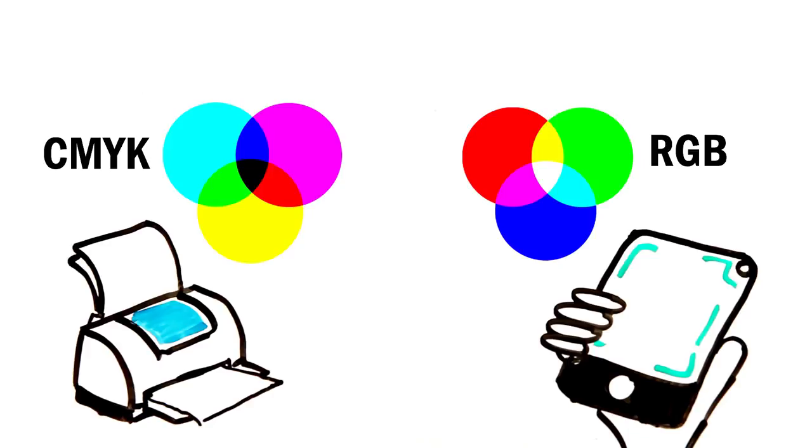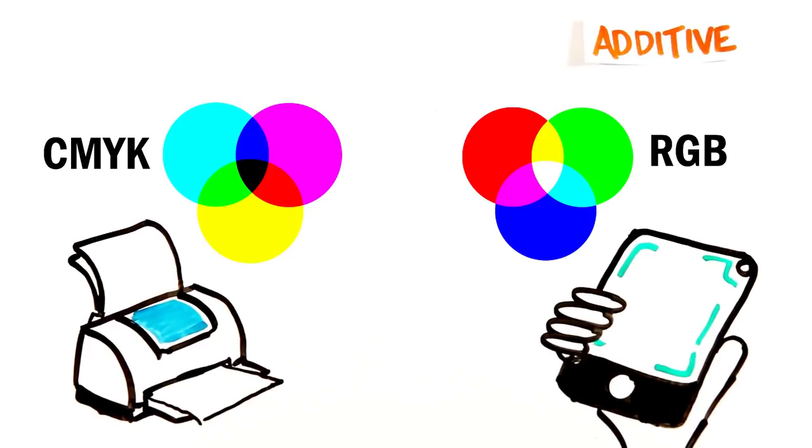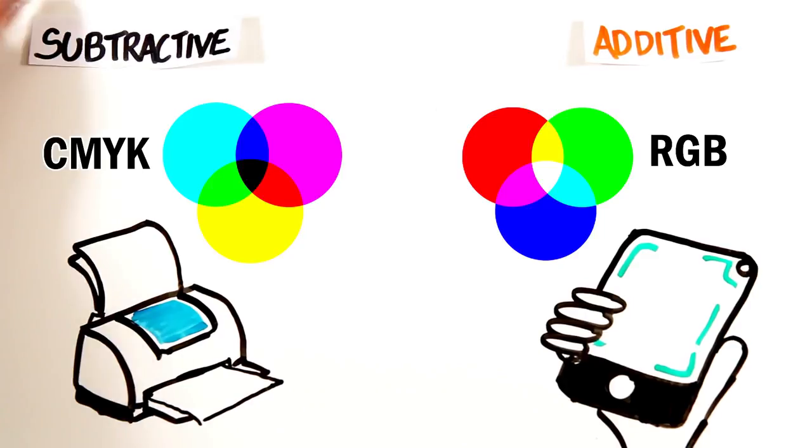These are different color models where RGB is additive, meaning the mixing of different lights of color create new colors, while the other two are subtractive models and absorb different wavelengths of light.